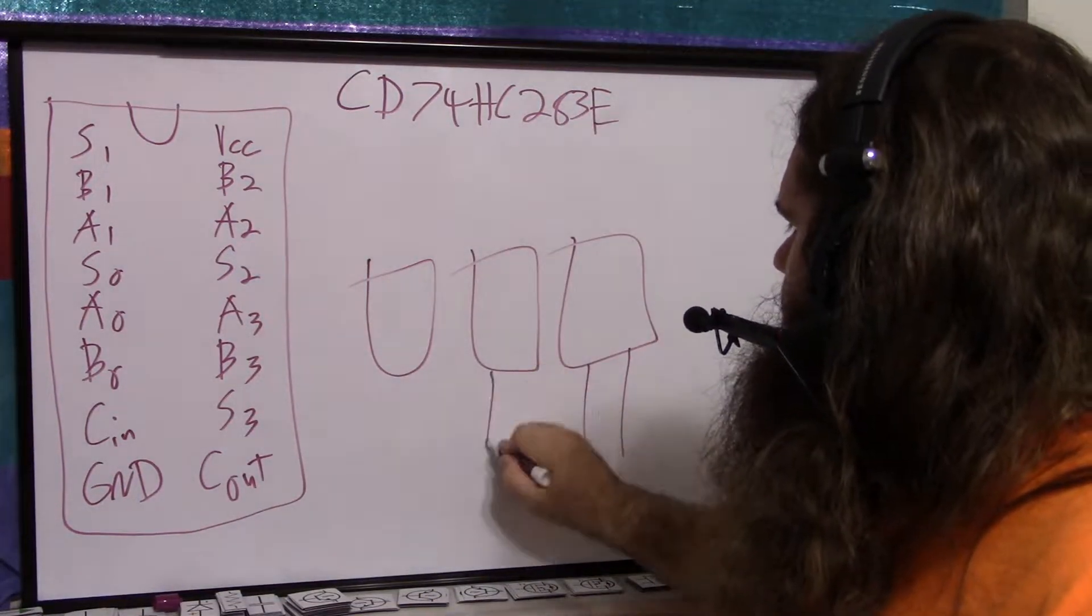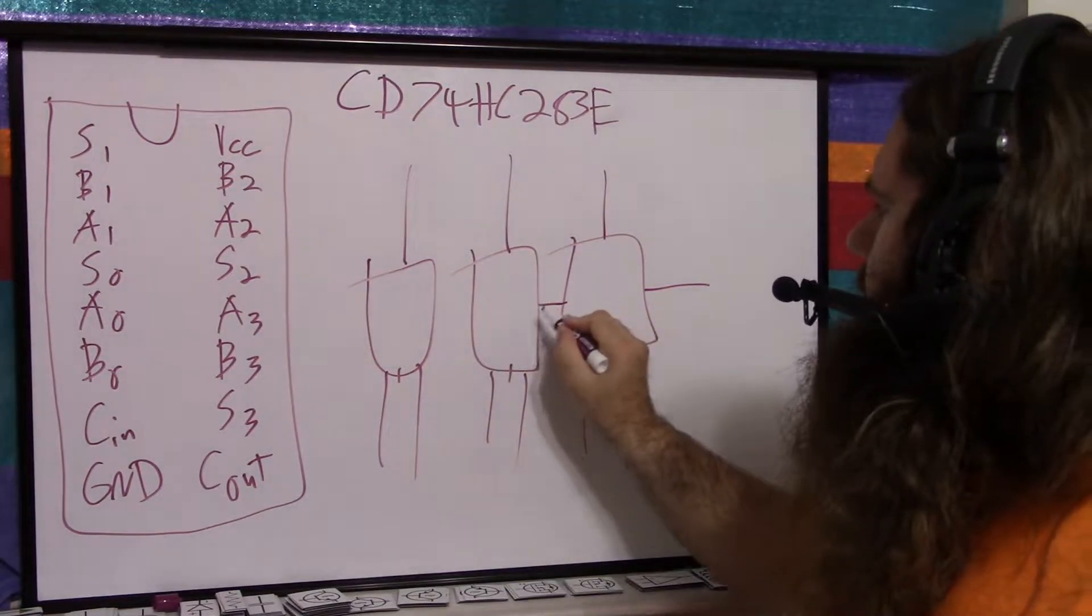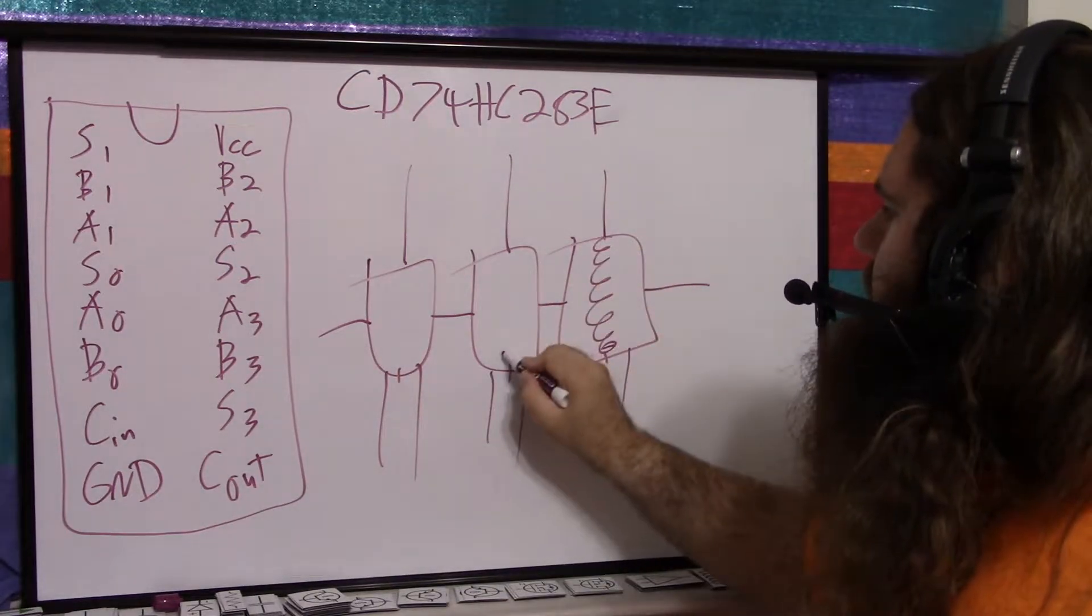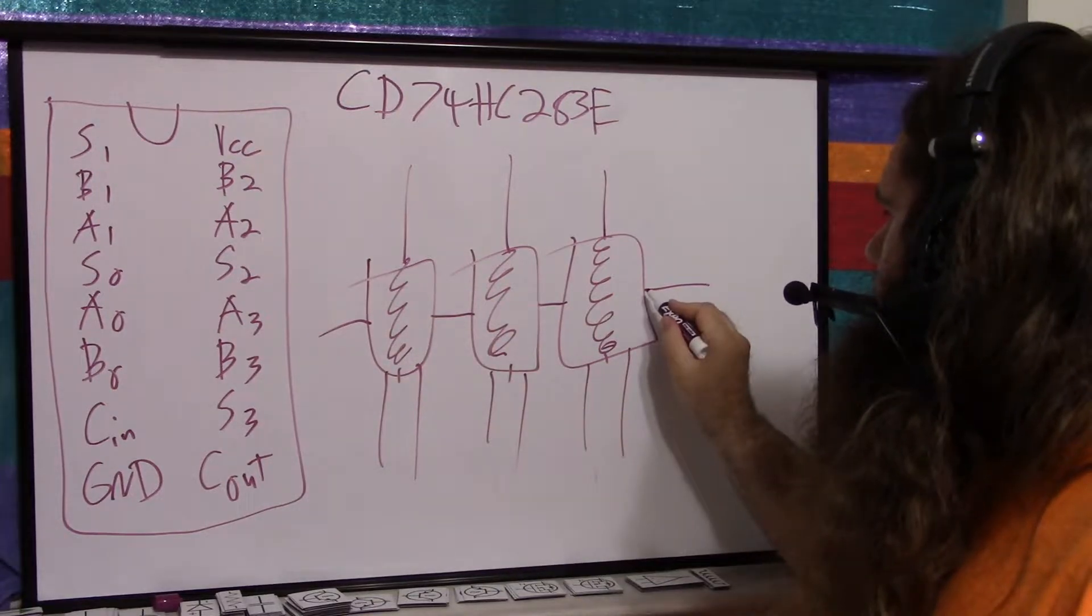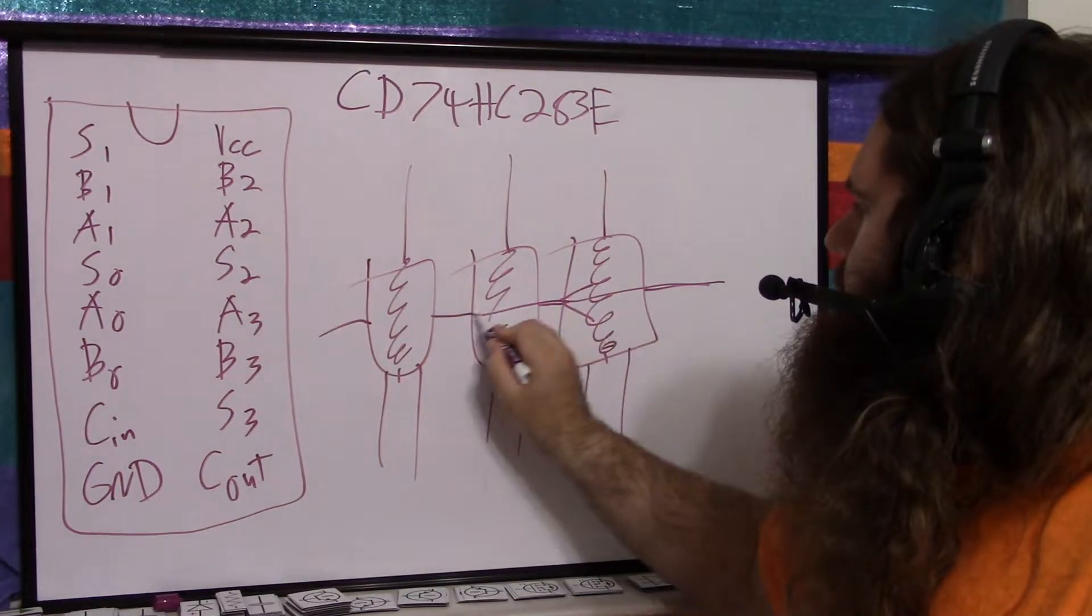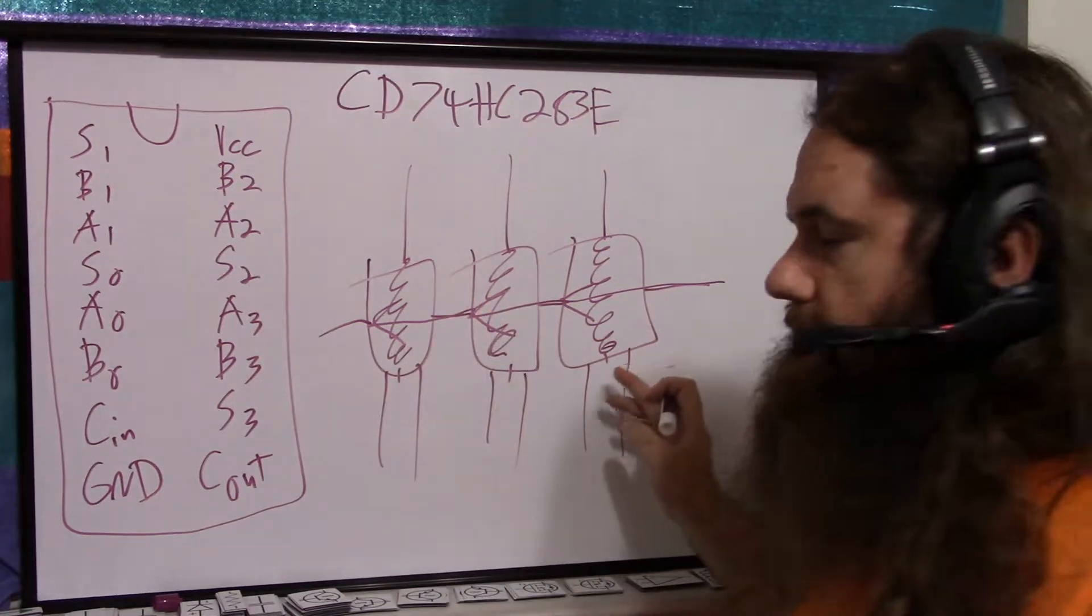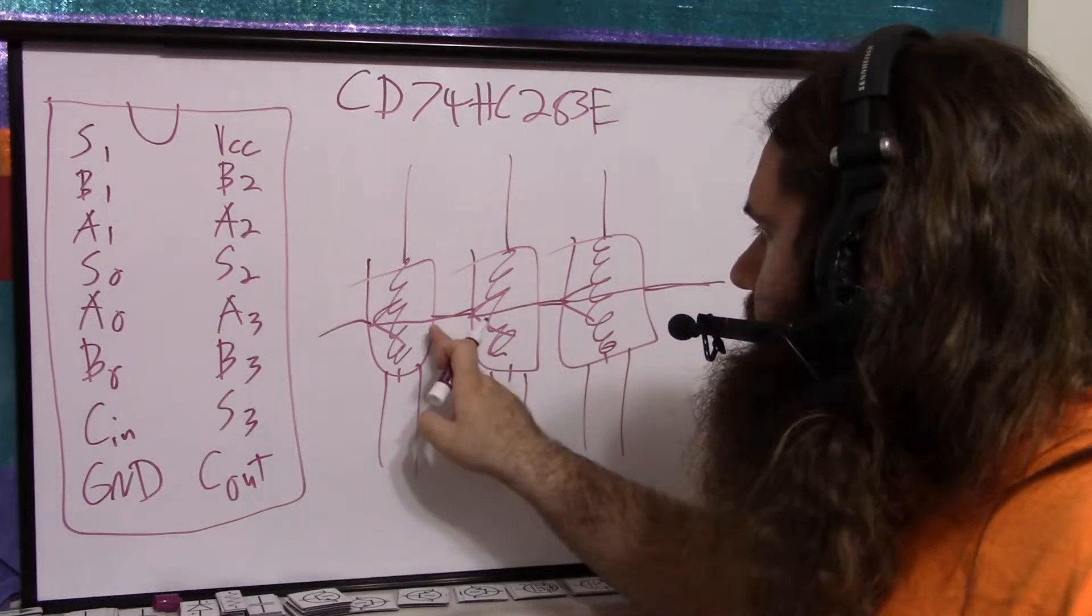While it's still working on that, it can compute the carry really quick and throw it to the next chip to update that. So if you have multiple chips, you have the ins, and then the sums come out, and you've got your carry in, carry out, carry in, carry out, carry in, carry out. So while each one works through the slow process of computing its actual sum, the carry gets shoosted on through very quickly. So the last one is still going to finish slower than the first one, but it's going to be faster overall.